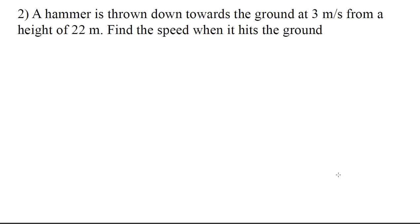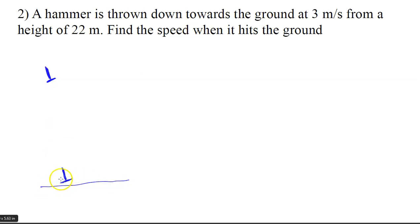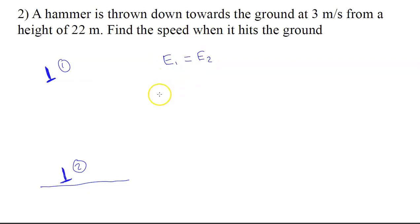Here we've got a hammer that's getting thrown down toward the ground. The hammer starts up at point one and then is down at point two, just before it hits the ground. A central idea on this test is that the energy at point one has to equal the energy at point two — you're not going to gain or lose any, it just changes form. So this is a perfect place to use conservation of energy.